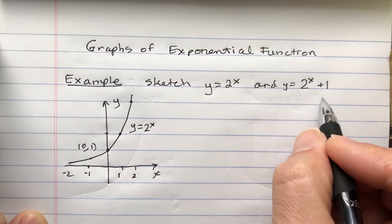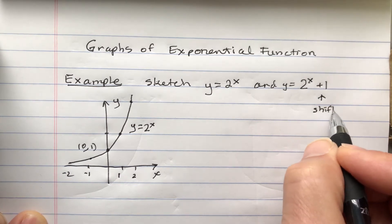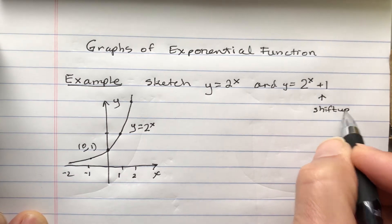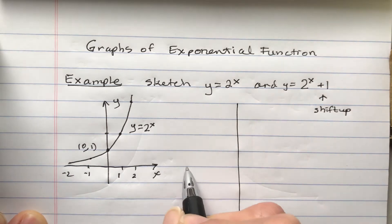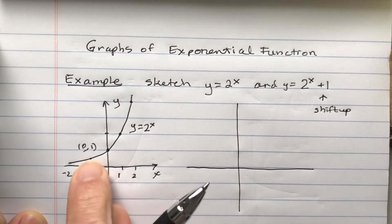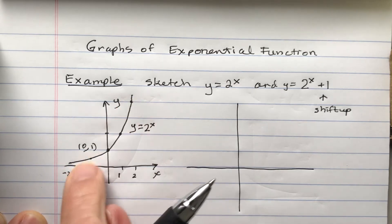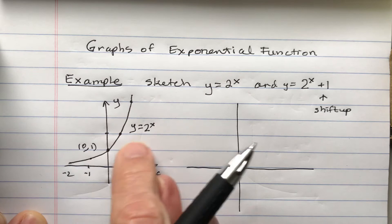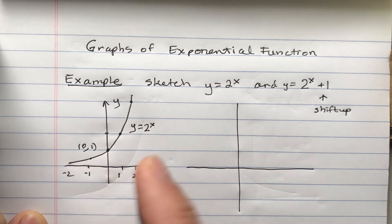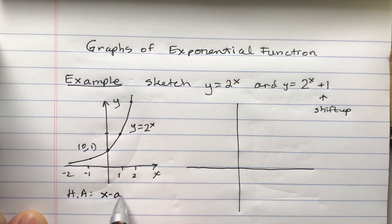That plus 1 is going to be a shift up. What are we really looking at? We're looking at the general shape — it's not a line, it has a curve to it. And as you can see what the curve is, there's a horizontal asymptote. Write that down: horizontal asymptote, which is the x-axis.